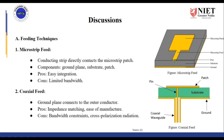In feeding techniques, we have two types: Microstrip Feed and Coaxial Feed. In contact feeding, the Microstrip Feed has direct contact with the radiating patch. As you can see in the figure, the feed is in direct contact with the Microstrip Patch and there is a port at the edge of this Microstrip Patch. It is very easy to integrate, but the limitation is that the bandwidth would be narrow or limited.